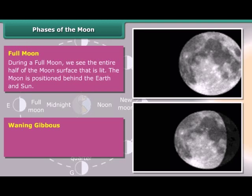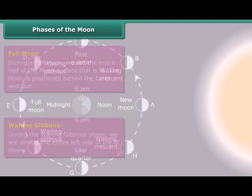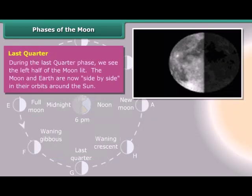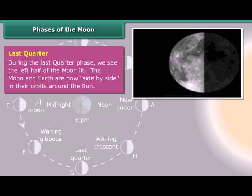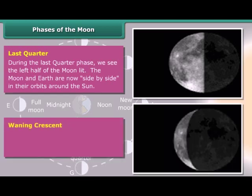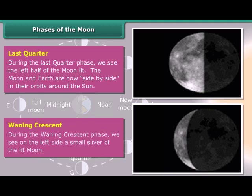Waning Gibbous: During the waning gibbous phase, we see almost the entire left side of the lit Moon. Last Quarter: During the last quarter phase, we see the left half of the Moon lit. The Moon and Earth are now side by side in their orbits around the Sun. Waning Crescent: During the waning crescent phase, we see on the left side a small sliver of the lit Moon.